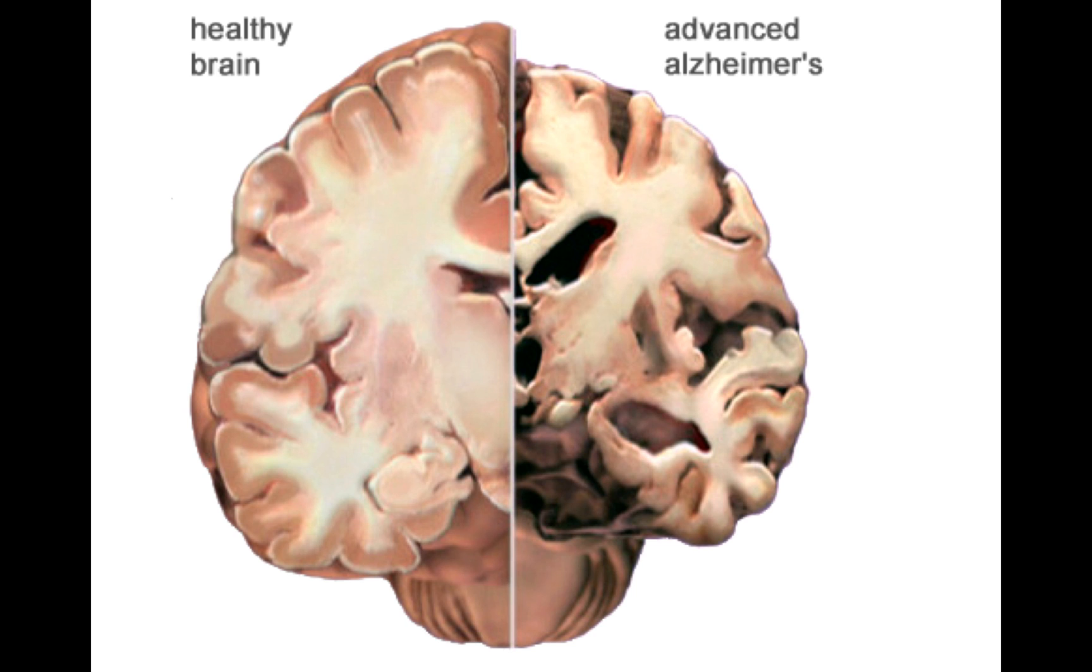Just a quick look at the ground truth. Here are two fixed brains. The left one is a healthy one. The right one is of advanced Alzheimer's. Notice that the damage in the Alzheimer's brain is diffuse. It's non-focal. You can also see the enlarged ventricles.